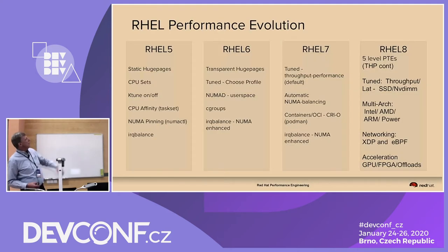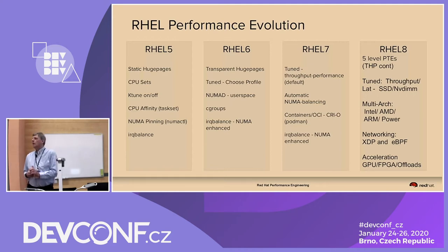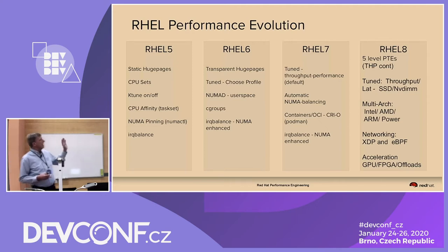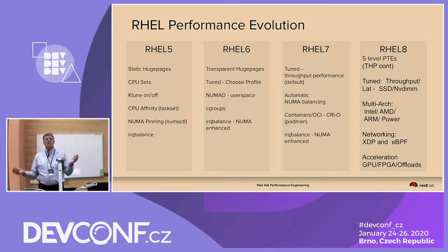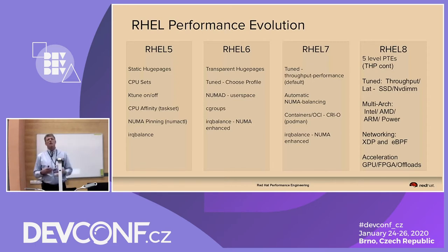In RHEL 5, things were pretty static — we had static huge pages and CPU sets, and you literally built the kernel with a lot of these things in it. As it evolved from 6 to 7 to 8, everything became a lot more dynamic. We have good ways of adjusting parameters on the fly, and much better ways of picking what we call a profile — so if you're going to run a database server, you can select out-of-the-box how you want the system to behave.